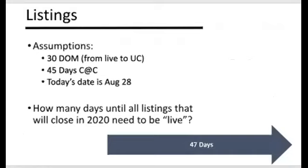Let's look at the listings really quickly. In this example, think about when you have to have these listings taken. Write down what it is in your market and what you've actually been experiencing. So if we are experiencing 30 days on market — that's from going live to under contract, not live to close — some assumptions would change if it were 3 days or 120 days. We're basing this on a 30-days-on-market.